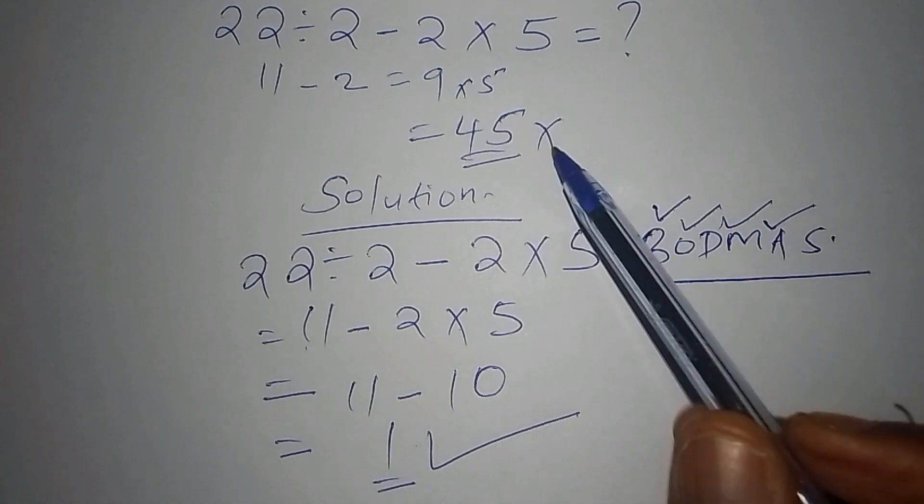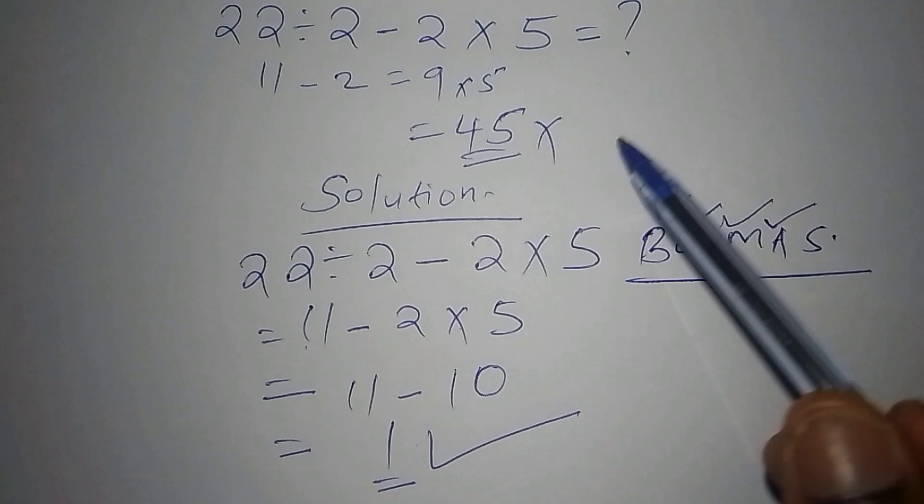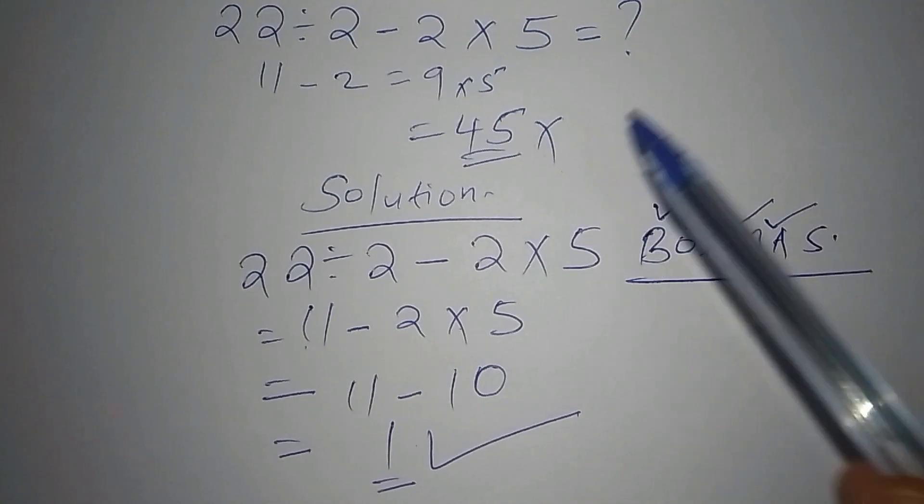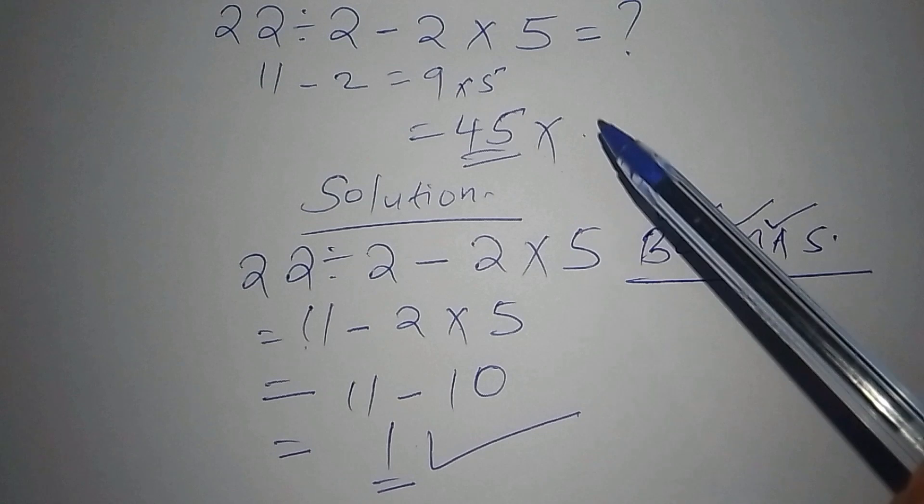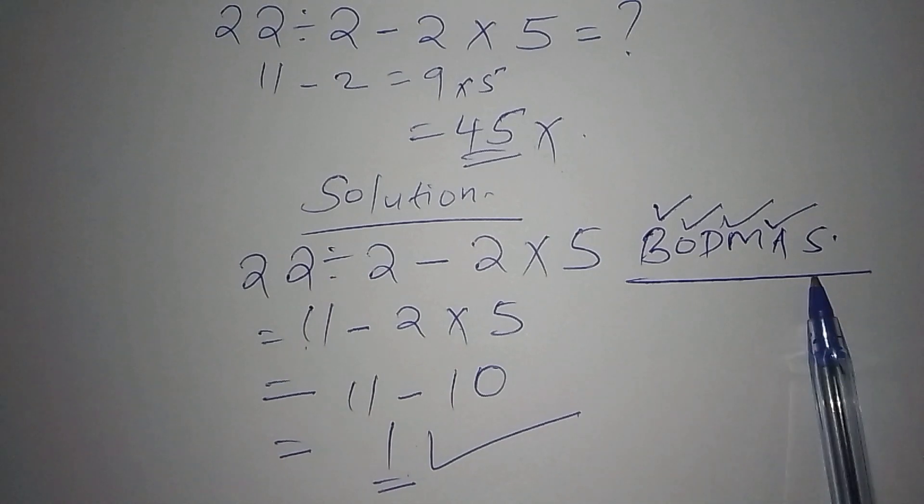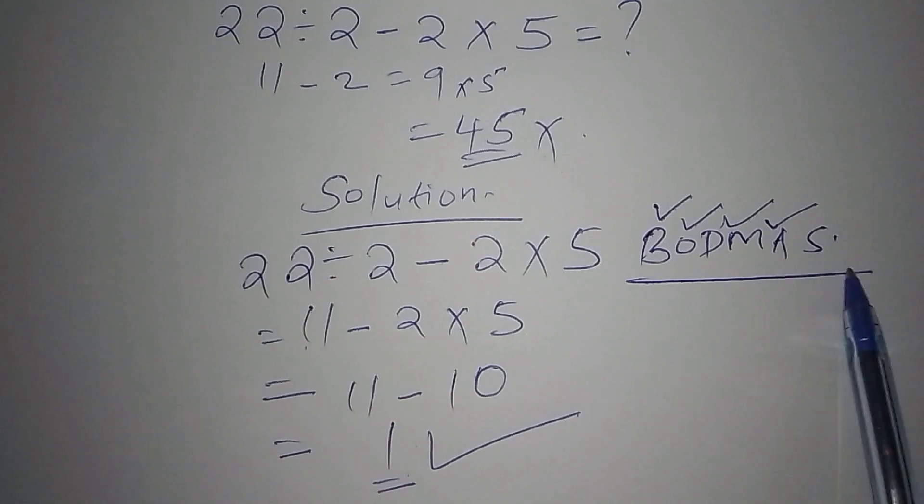The correct answer is 1 and not 45. This 45 we got it simply because we didn't follow the correct order of operations. That is why we keep finding that we are ending up with the wrong answer, while when we work it out this way by following the correct method, we reach the correct answer.